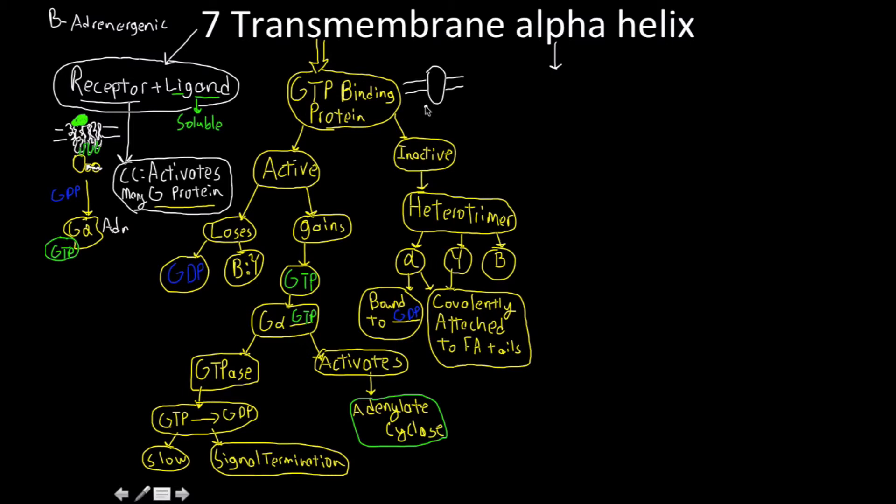That's going to activate adenylate cyclase, which is going to be converting ATP to cyclic AMP. Attached to this G alpha is GTP, and however long that GTP is in place, that's how long the G alpha subunit protein is going to be activating adenylate cyclase. What does adenylate cyclase do? Well, we have ATP going in, and then coming out, we have cyclic adenosine monophosphate.